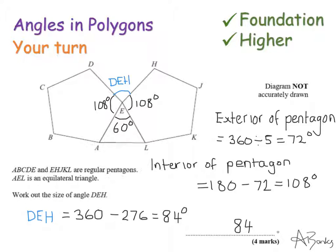Here's the full solution to the practice question. Angle DEH is the angle from D to E to H, marked in blue. You should have found the interior angle of a pentagon first (108 degrees), then calculated 360 − 108 − 108 − 60 = 84 degrees. The final answer is 84 degrees.